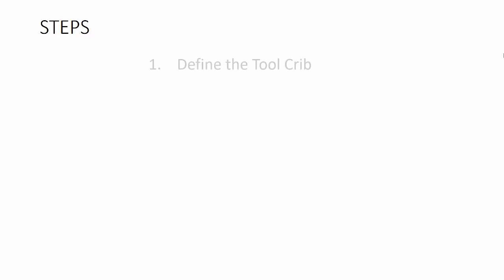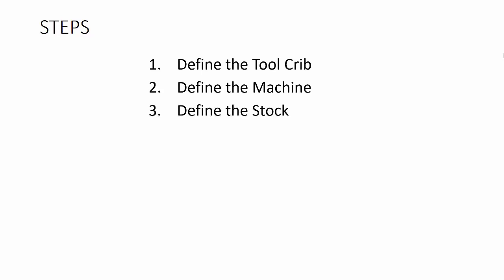It's an eight-step process to get everything set up using SolidWorks CAM so that we can create the G-code necessary to run the CNC mill. I'll take you through these eight steps in more detail throughout this video. Here are the steps in summary: first, you'll need to define the tool crib that you're using, then we need to define the machine, and then define the stock.